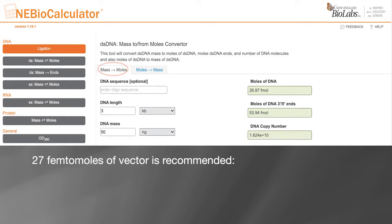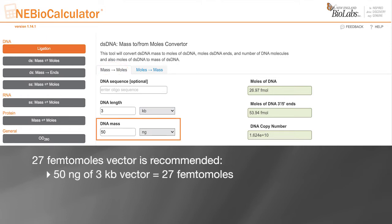Using the NEBioCalculator double-stranded DNA mass to moles module, we determine that 50 nanograms of a 3 KB plasmid is 27 femtomoles. Therefore, we need to calculate the amount of mass of the 6 KB plasmid that will equal 27 femtomoles to have enough DNA ends for a ligation.